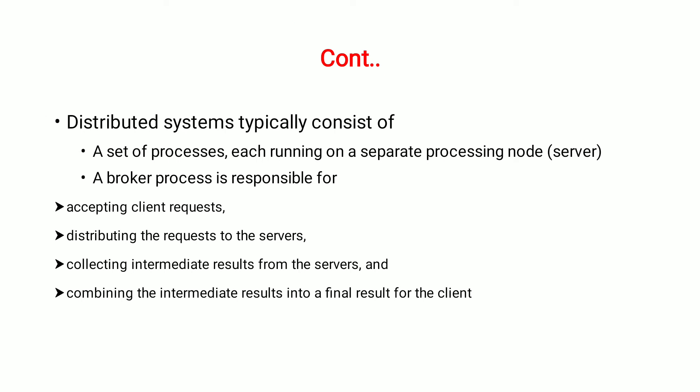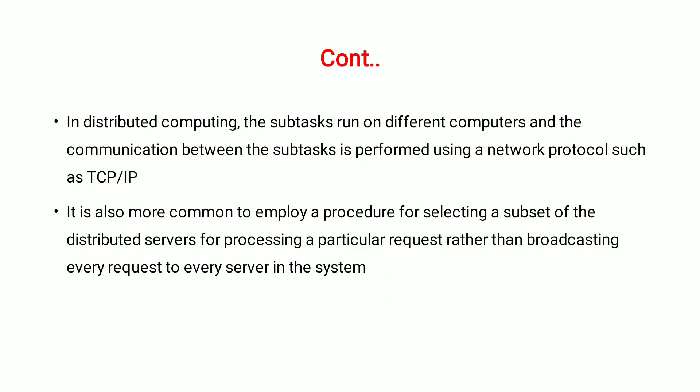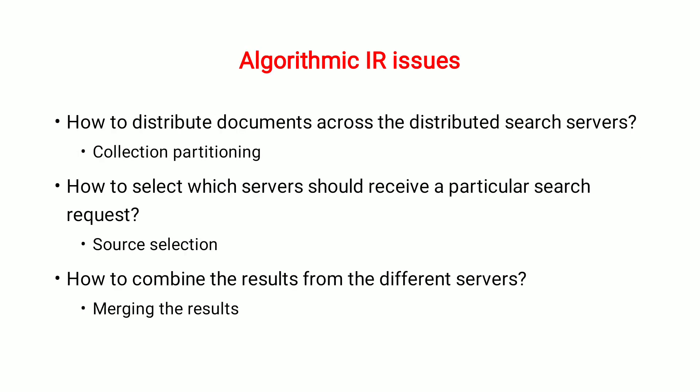Distributed systems typically consist of a set of processors, each running on a separate processing node — that is, a server — and a broker process responsible for accepting client requests, distributing the requests to the servers, collecting intermediate results from the servers, and combining the intermediate results into a final result for the client. In distributed computing, the subtasks run on different computers and communication between subtasks is performed using a network protocol such as TCP/IP — Transfer Control Protocol and Internet Protocol. It is also common to employ a procedure for selecting a subset of the distributed servers for processing a particular request rather than broadcasting every request to every server.